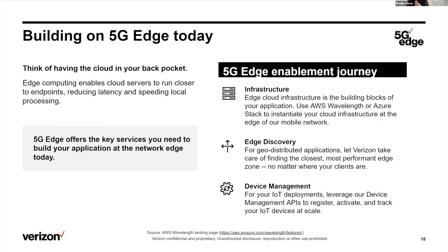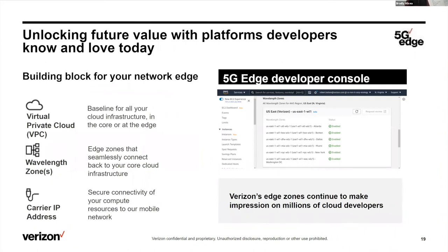For IoT applications, we have our ThingsSpace platform — a rich set of APIs to register devices, track geolocation, and more. Everything I'm talking about here is real, living, breathing code. If you go to github.com/verizon/5G-Edge-Tutorials, I manage that repo. We have automation templates using the SDK, CDK, CloudFormation — which is AWS's managed infrastructure-as-code service — Terraform, the open source equivalent, and more. All of the building blocks you see here are well documented on GitHub for anybody to get started on.